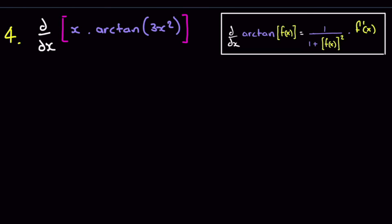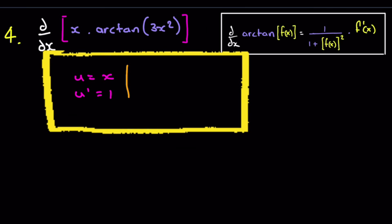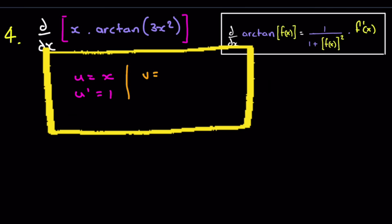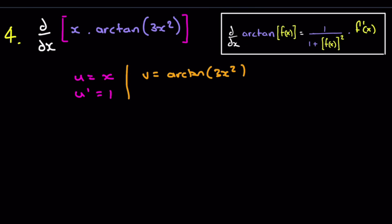Okay, question 4. So this is another product rule. We can see this. I think it's a little bit easier than the one before. Let's call u equal to x. U prime is equal to 1. Therefore, then v is going to be equal to arc tan 3x squared. And v prime is equal to this expression over here. So it's going to be 1 over 1 plus now 3x all squared. It's going to be 9x to the 4 times by the derivative. So that'd be 6x.